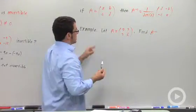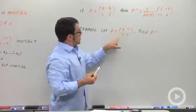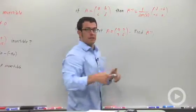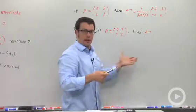So let's use that. Here's a matrix A: 2, 3, 3, 6. Find A inverse. And by the way, if you happen to get determinant is zero, then it doesn't have an inverse, so you can also say not invertible.